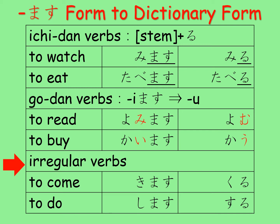With irregular verbs, キマス becomes くる and シマス becomes する。 If this explanation was too fast, I have a separate video explaining the change more thoroughly, so please click the icon at the top right corner and follow the link.